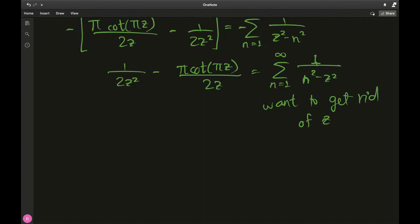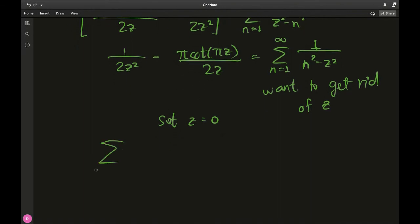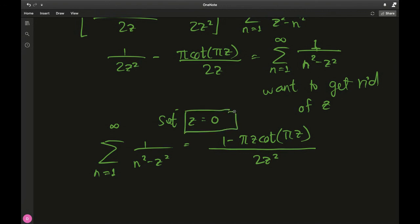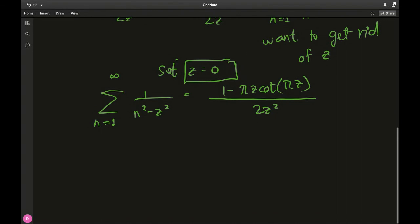So we want to get rid of z, and the good thing is z is not dependent on this sum. Before doing that, I would just like to complete the denominator over here. So we have this expression as the infinite sum being equal to the common denominator is 2z squared, so we have 1 minus πz times cotangent of πz divided by 2z squared. And as I said, I want to set z equal to 0.